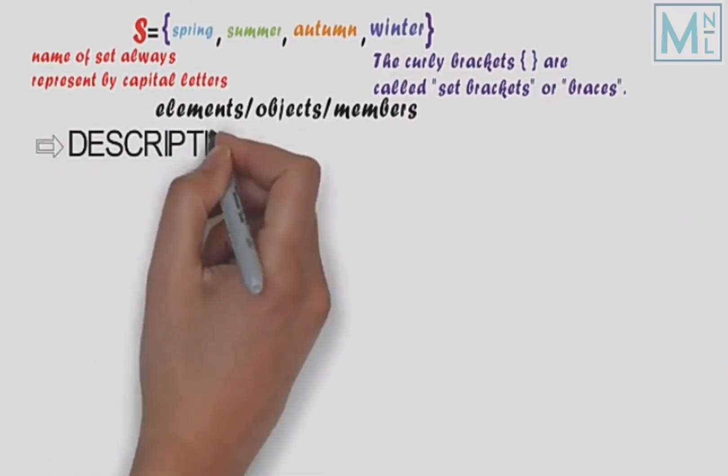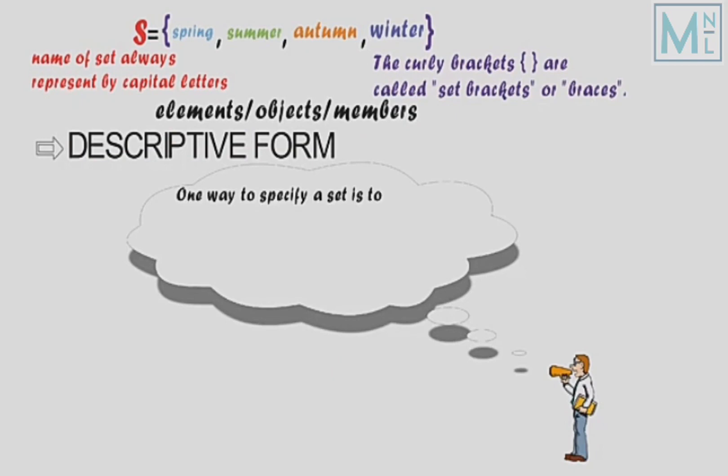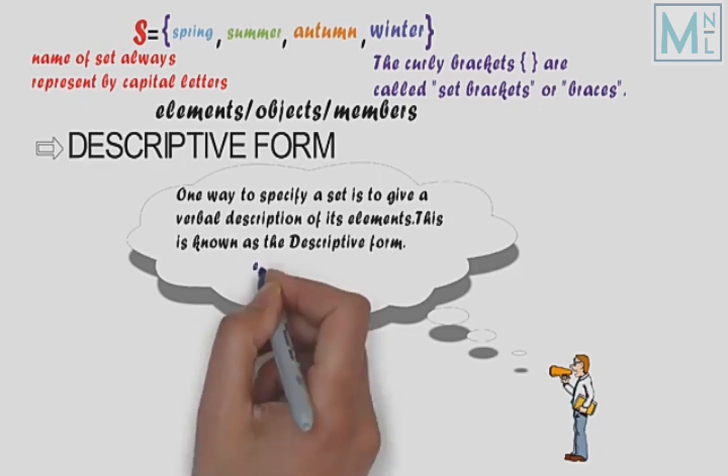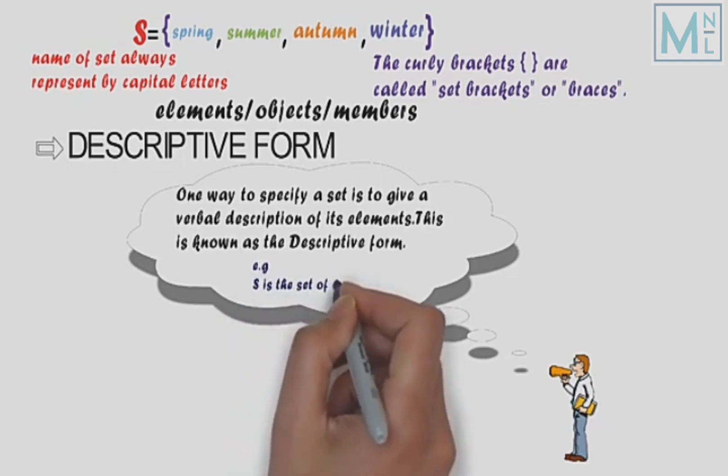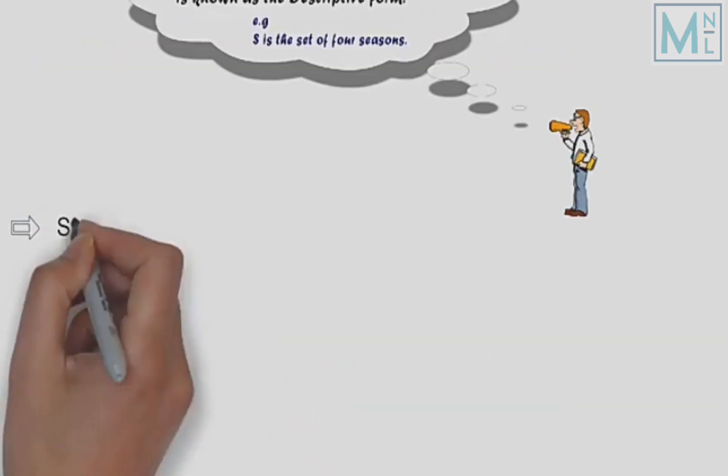Dusra tarika jo hai set ko present karne ka, woh hai descriptive form. Is method mein hum set ke elements ko zabani bayan karte hain, ya phir kisi zabaan mein is set ke elements ko bayan karen likh kar, descriptive form kehlata hai. Misal ke taur par, S is the set of four seasons.